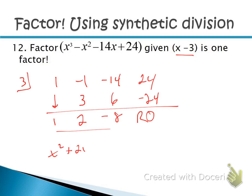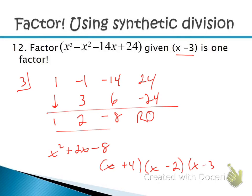To factor completely, factor x² + 2x − 8: we need factors of −8 that add to +2, which is +4 and −2. So x² + 2x − 8 = (x + 4)(x − 2). The three complete factors of the original polynomial are (x + 4)(x − 2)(x − 3).